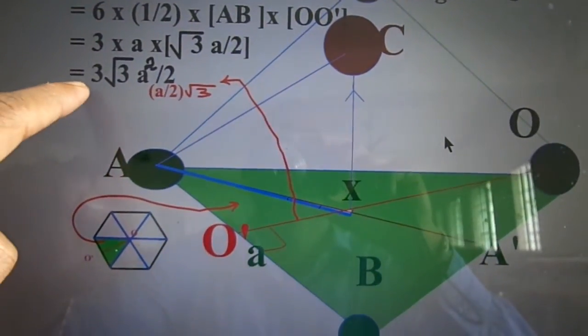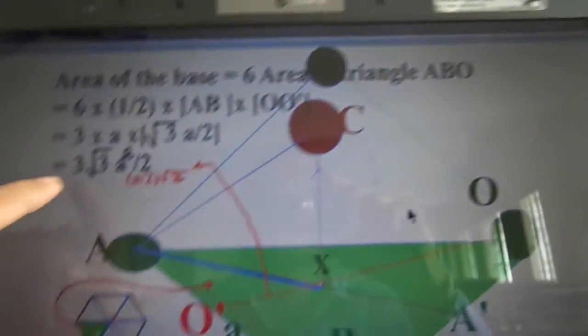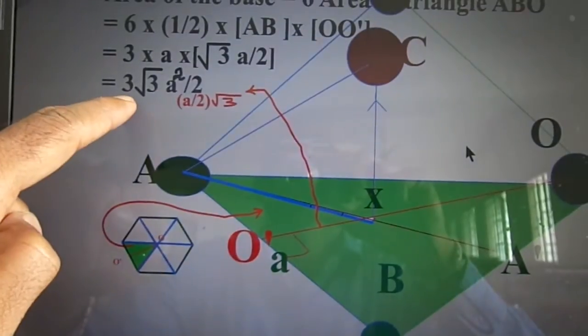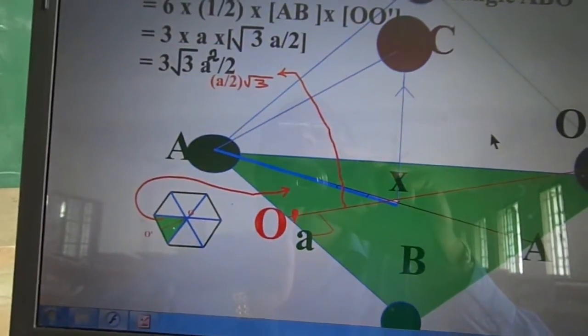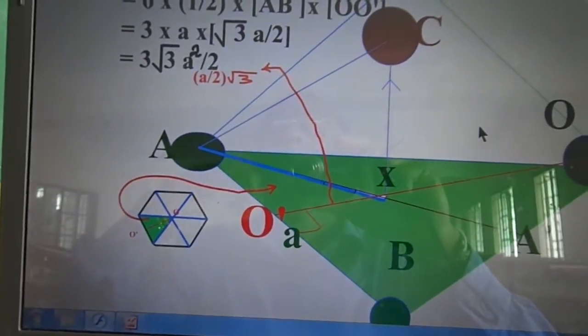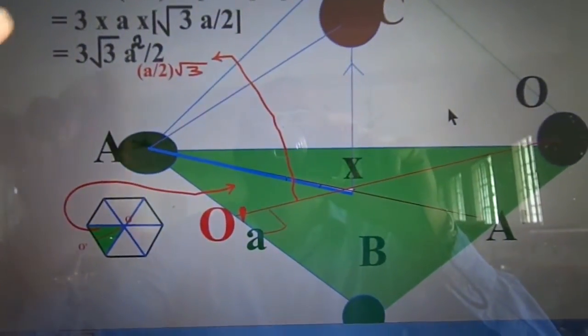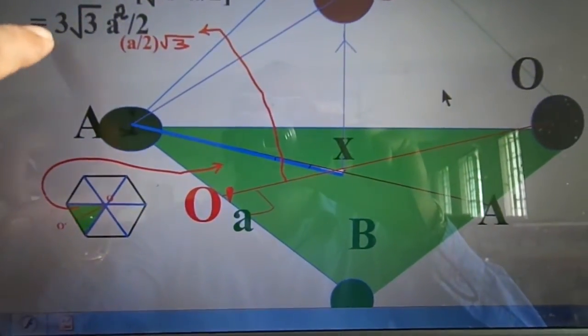So if I simplify, it comes to this. 3 into √3a² by 2. So this is the area of the base.